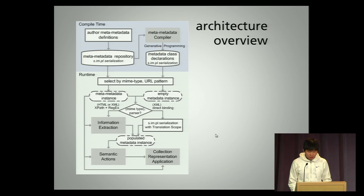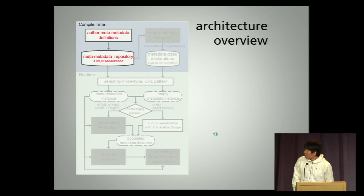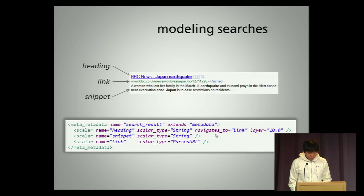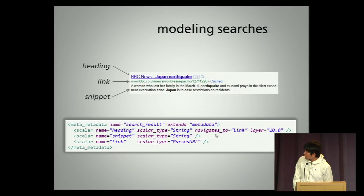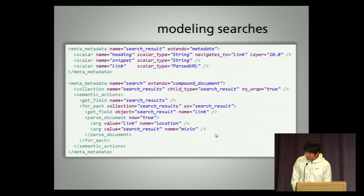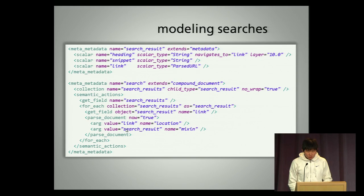Here is the overview of the architecture, and I will go through the details with the use case of integrating search results from different search engines. Let's look at the authoring process first. This is a typical search result from Google, which has a heading, a link, and a snippet from the document it refers to. We can use this wrapper to model this metadata schema. With this definition of search result, we can define a search as a collection of search results. This semantic action basically iterates over each search result and goes to that URL to see if there are new semantics we can use — it's basically a crawling action.